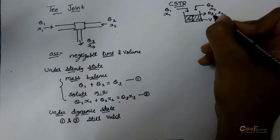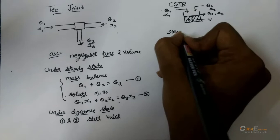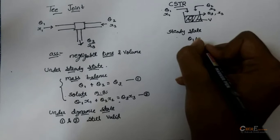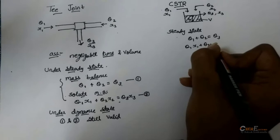Now, we will model this equation under steady state. Still, the equations for T-joint steady state are valid here. So, Q1 plus Q2 equal to Q3, Q1X1 plus Q2X2 is equal to Q3X3.